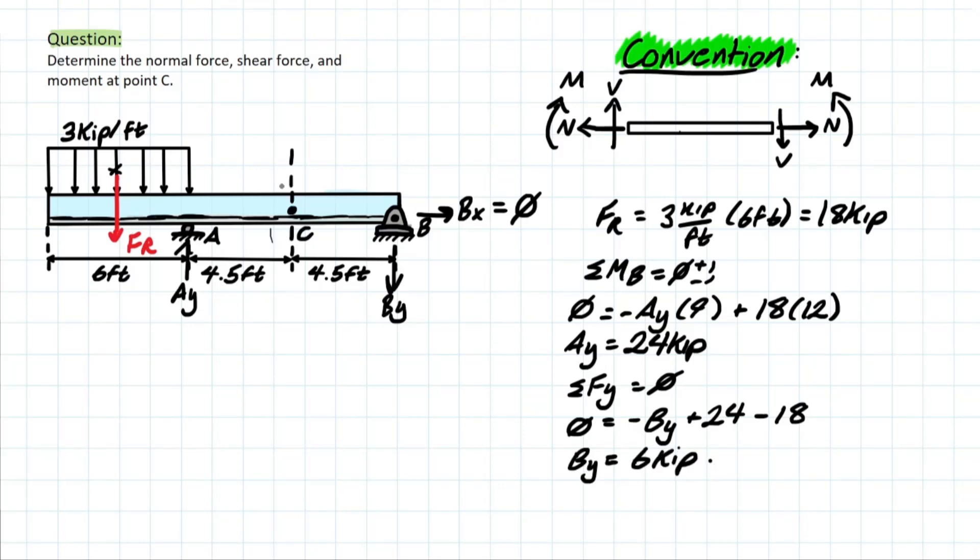So now we can go ahead and take the cut at C to figure out what our internal forces are going to be at this section. But when we take this cut, we want to pick the simpler side first to analyze. Similar to method of cuts for trusses, it just makes our lives a lot easier when we take the solution of the problem.